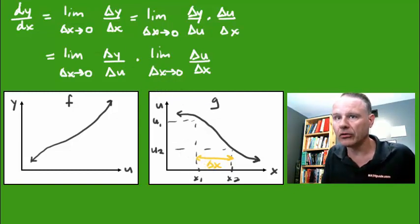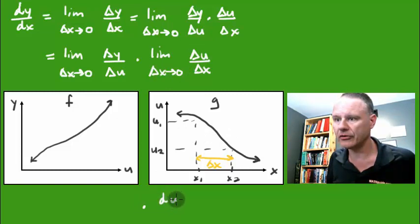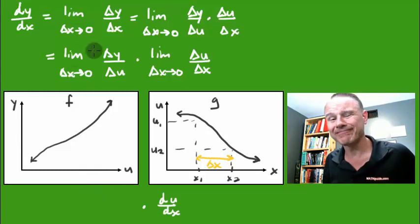If you look at the second limit, this just means I'm finding the derivative of this u, right? I'm just finding that I'm taking the derivative of u with respect to x. What does the other one mean?